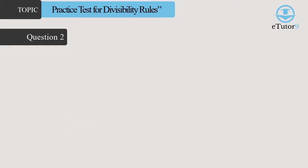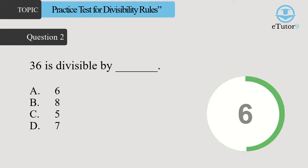Question 2: 36 is divisible by dash. Answer is A, 6.